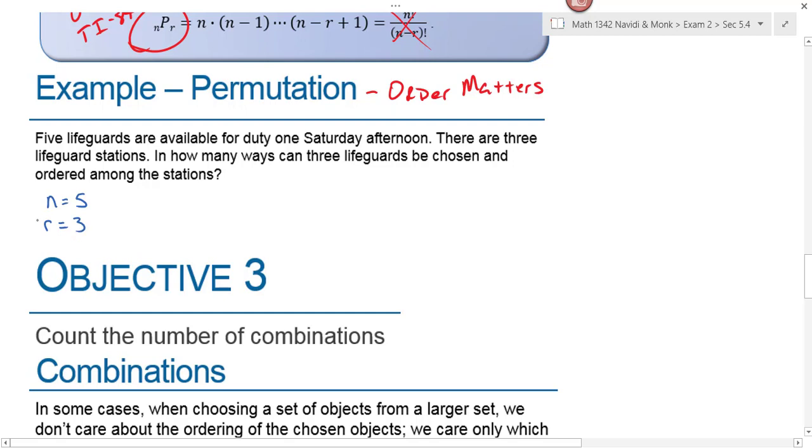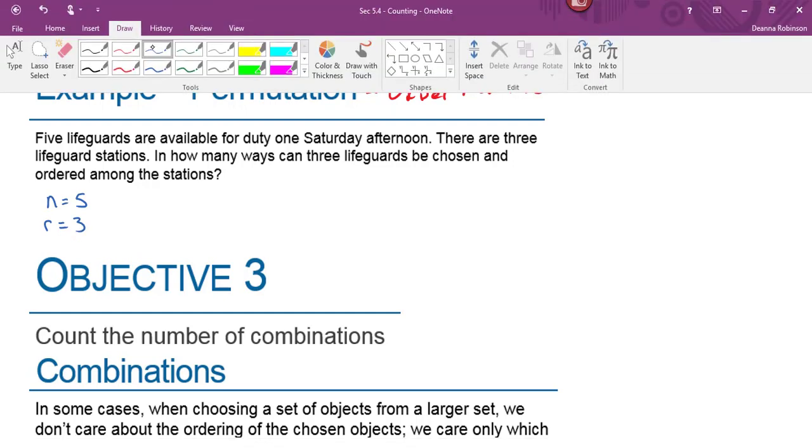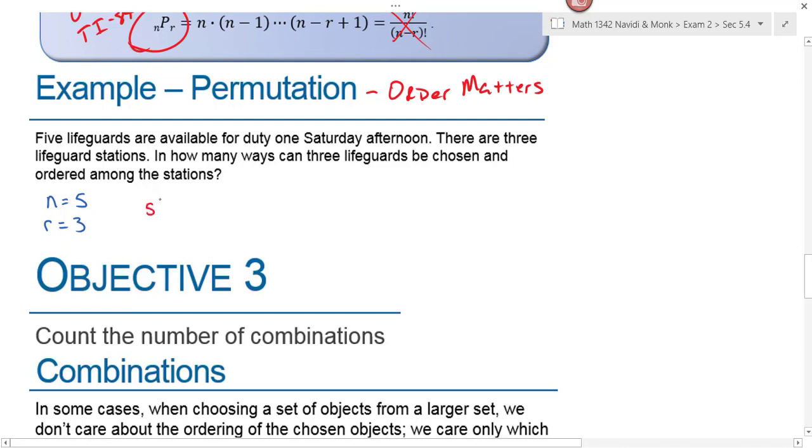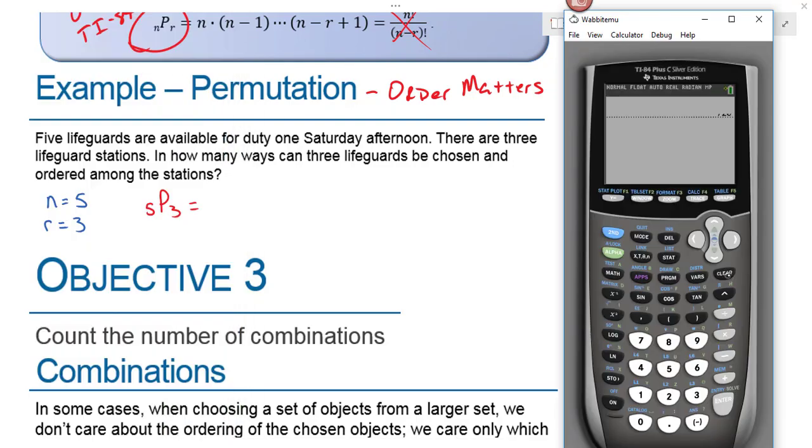So order matters there because you've got three different stations you could be at. We've got a total of five lifeguards, so n is equal to five. R here will be three because I can only select three out of the five. So on my calculator, what I want to find is five permuted three at a time. So I go to my calculator, and what do I have to hit first? Five, math, probability, two, three, enter. And we see that that would be 60.